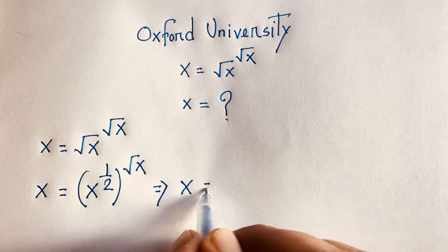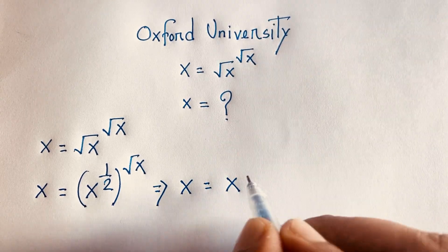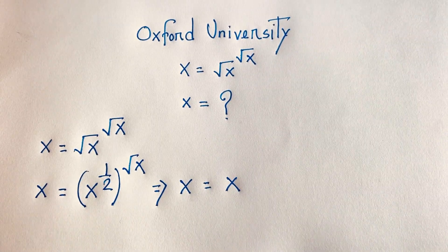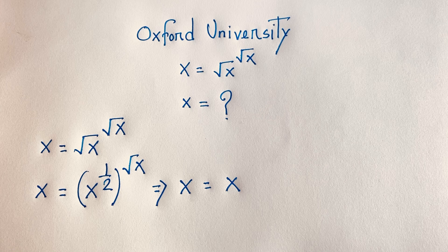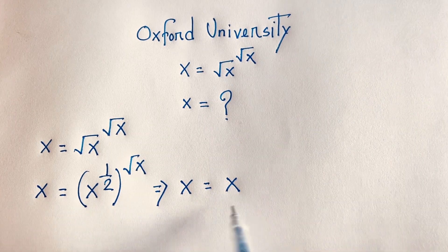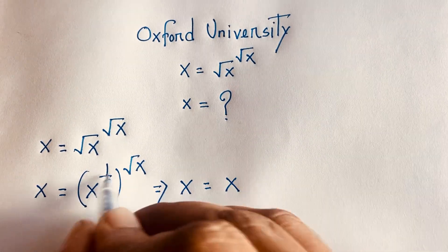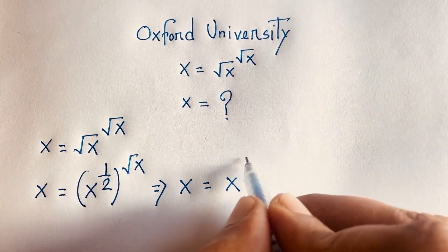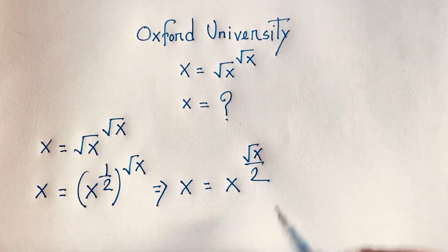So x equals x to the power one over two, raised to the power square root x. Applying the exponential law — a to the power n, all to the power m equals a to the power n times m — this becomes x to the power square root x over two.